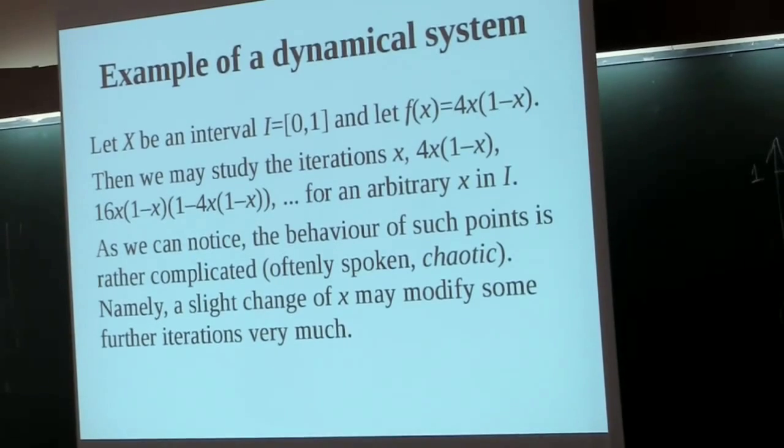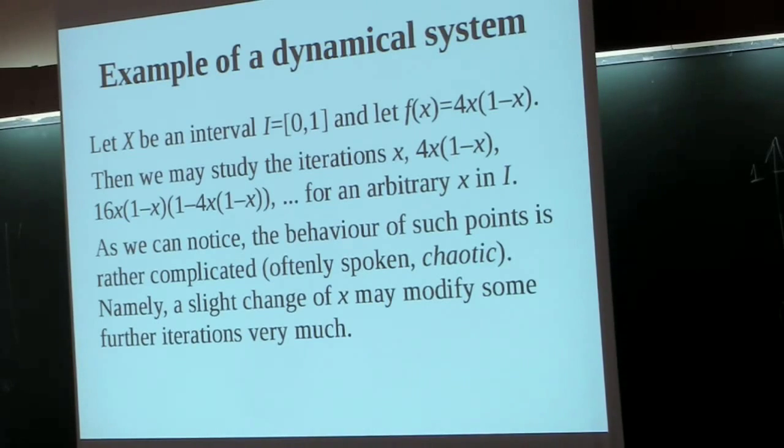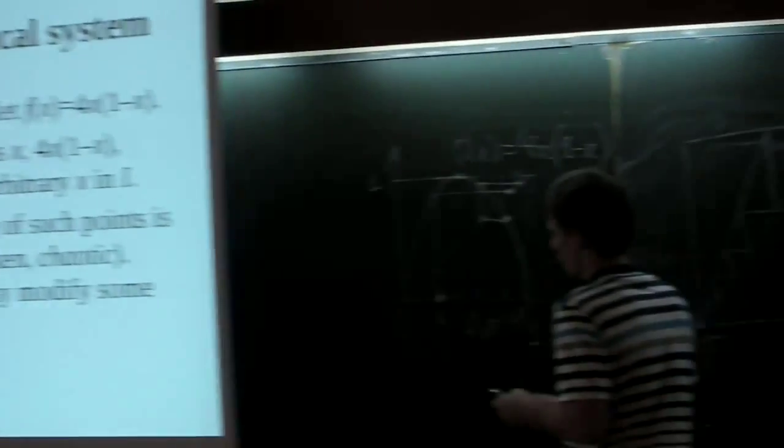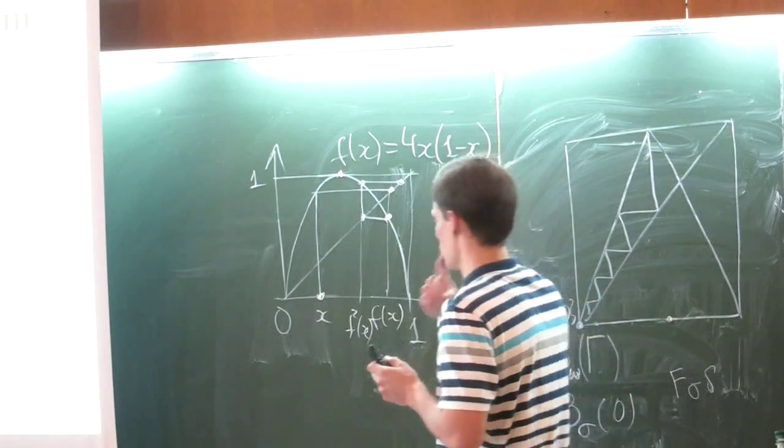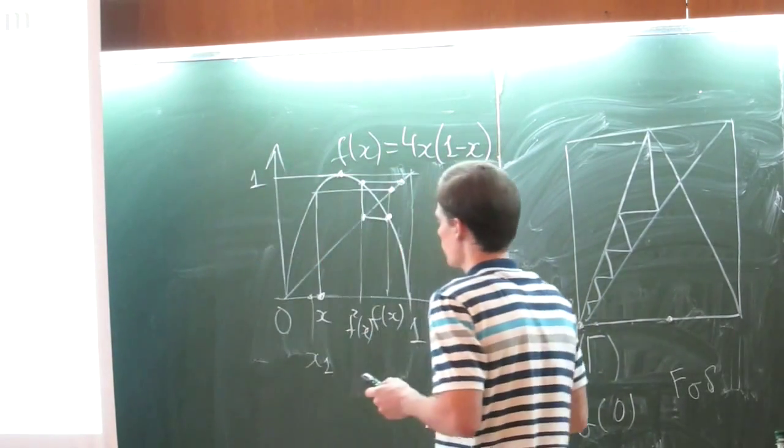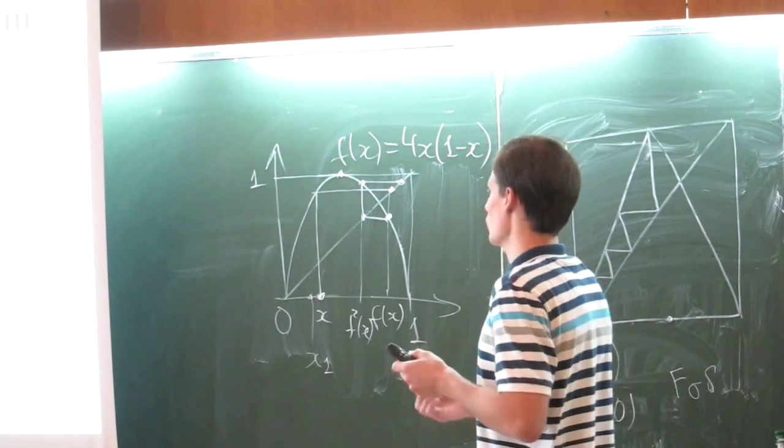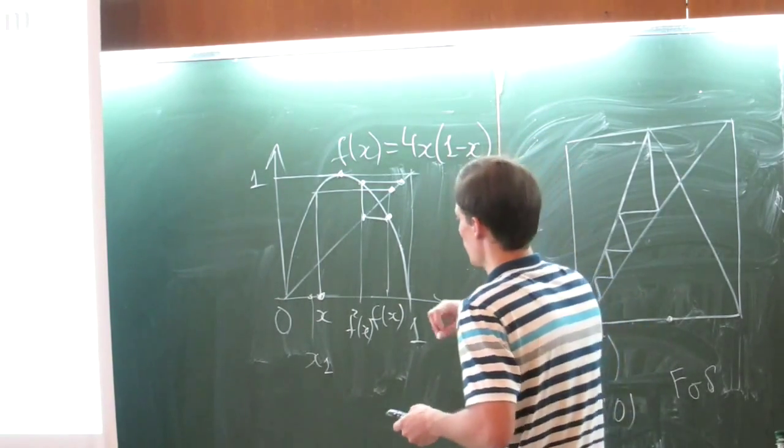For example, it has the following influence. If we take, instead of the point X, a very, very close point, for example, X1, and begin to iterate this point by the same rule.